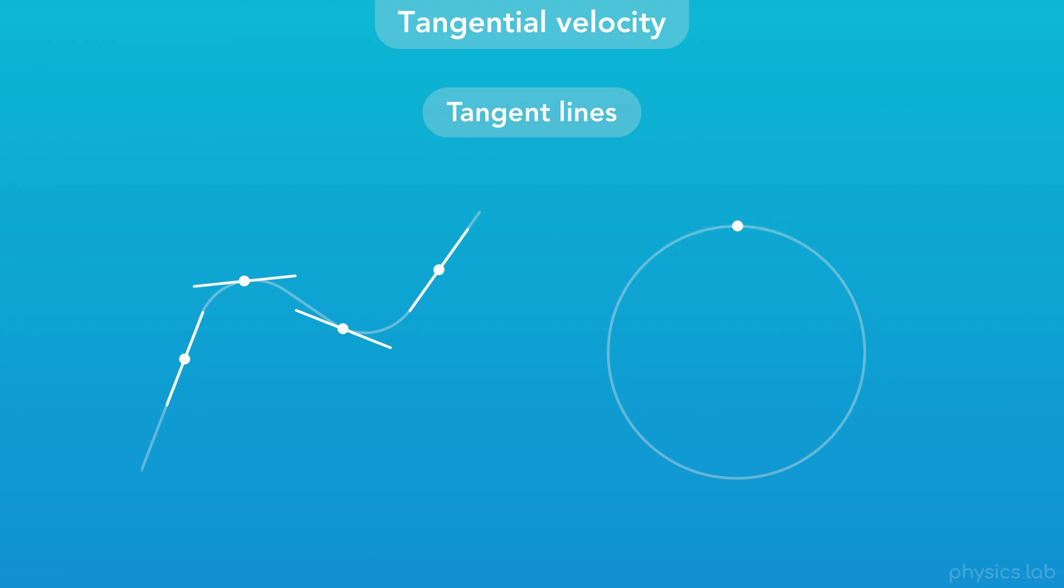For a point on a circle, the tangent line will only touch the circle at that one point. If we draw a line from that point to the center of the circle, the tangent line will be perpendicular to this radius line. And as this point moves around the circle, the tangent line rotates, and it always remains tangent to the circle.